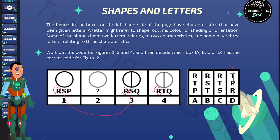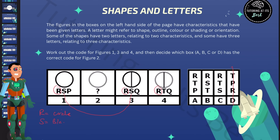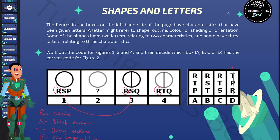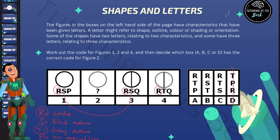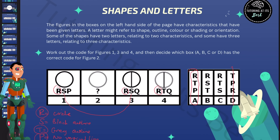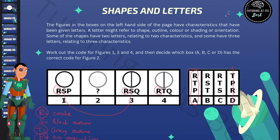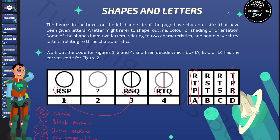So what have we noticed? Well, we know R is for the circle. We know that S is for the black outline. We know that T is the grey outline. And we know that P has no vertical line. You don't have to write it out just the way I'm doing, but it does make things a little bit clearer. So what are we looking for? We're looking for a circle, which is R, with a grey outline, which is T, and no vertical line, which is P. So that gives us A as our answer. Marvellous work. Remember, all questions will use this format in the answer. So without further ado, let's jump into it.